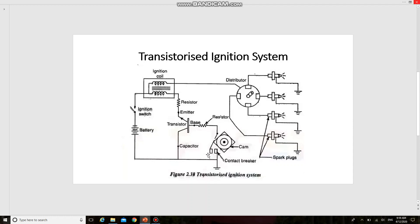When the contact breaker points are closed, a small current flows in the base circuit of the transistor. A large current flows in the emitter or collector circuit of the transistor and the primary winding of the ignition coil due to the normal transistor action. A magnetic field is set up in the primary winding of the coil.